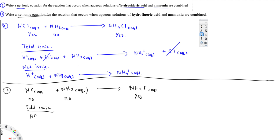Therefore the total ionic equation is: on the left side everything remains the same — HF aqueous plus NH3 aqueous — and on the right side NH4F dissociates to give NH4⁺ aqueous and F⁻ aqueous.